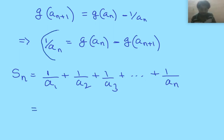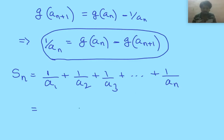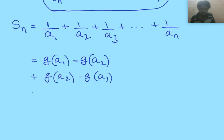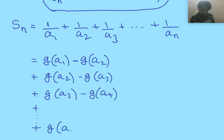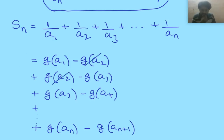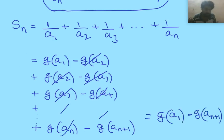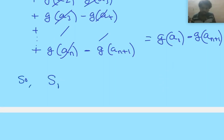Applying the equation: 1/a_1 is g(a_1) minus g(a_2), 1/a_2 is g(a_2) minus g(a_3), 1/a_3 is g(a_3) minus g(a_4), and so on till 1/a_n which is g(a_n) minus g(a_{n+1}). As you can see, most of the terms are cancelling out — this is what I mean by a telescoping series. So we have only two elements left: g(a_1) minus g(a_{n+1}). Therefore S_n equals g(a_1) minus g(a_{n+1}).